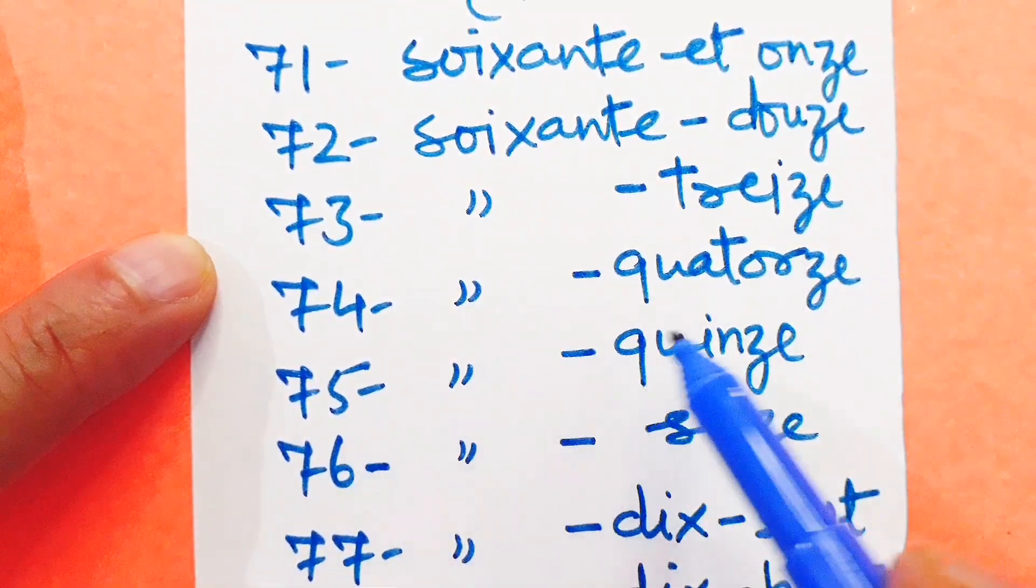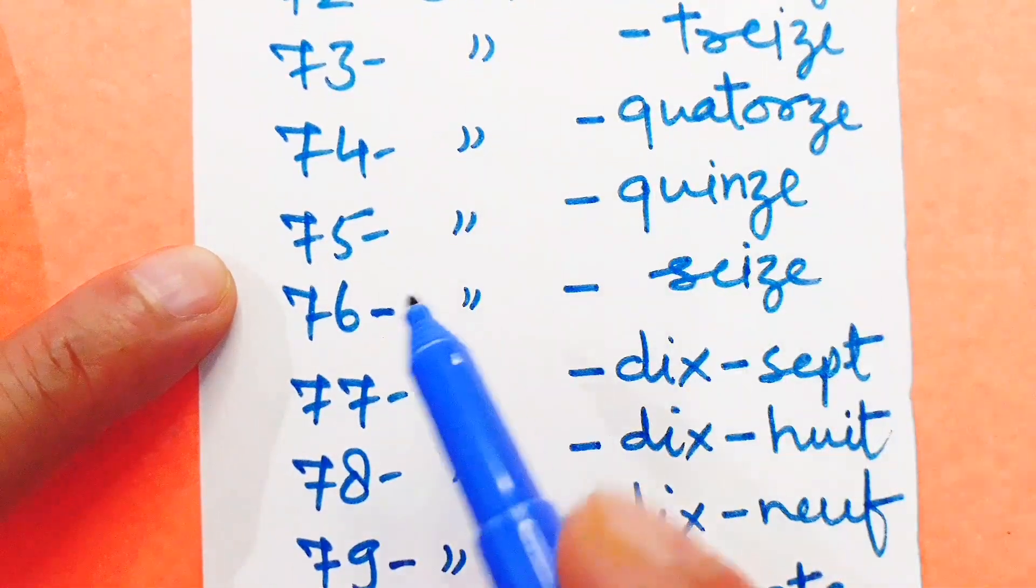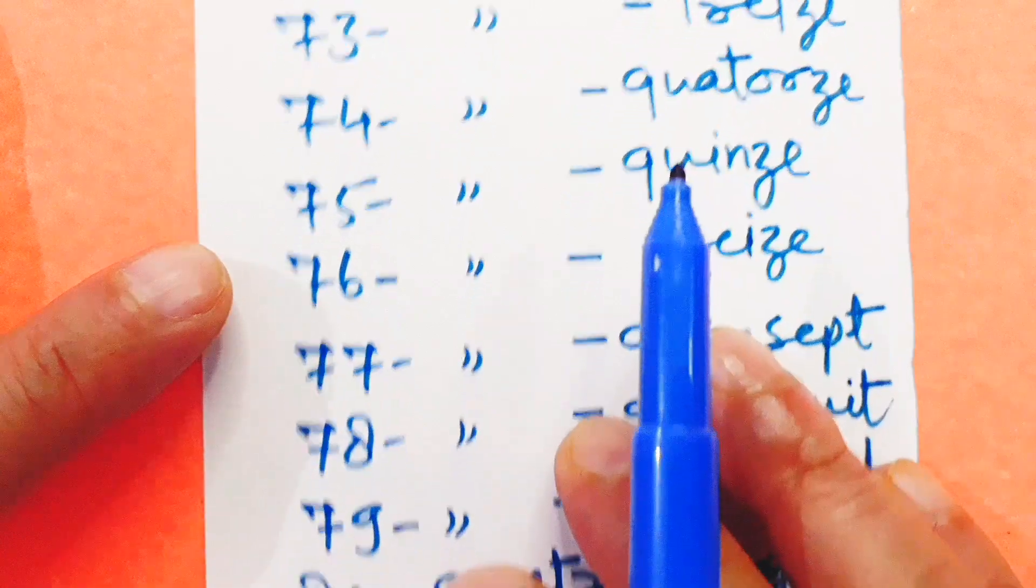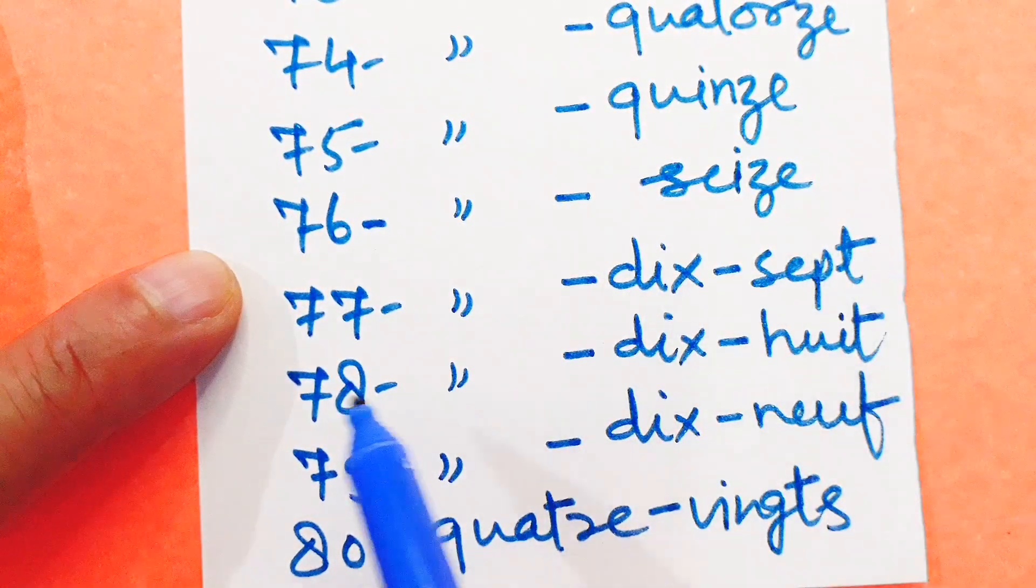74: Soixante-quatorze. 75: Soixante-quinze. 76: Soixante-seize. 77: Soixante-dix-sept.